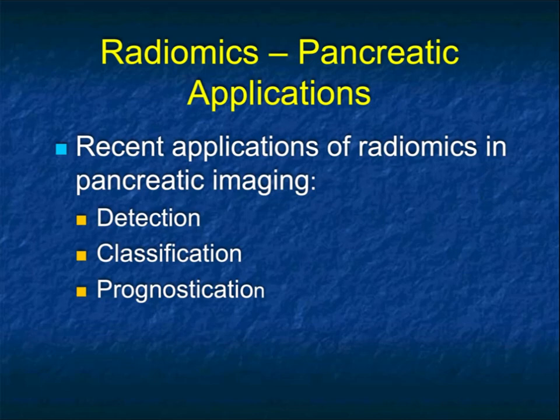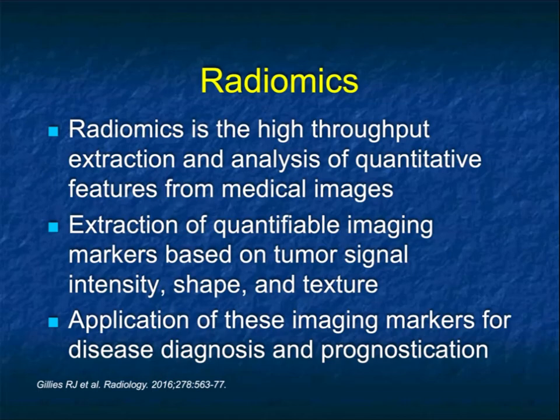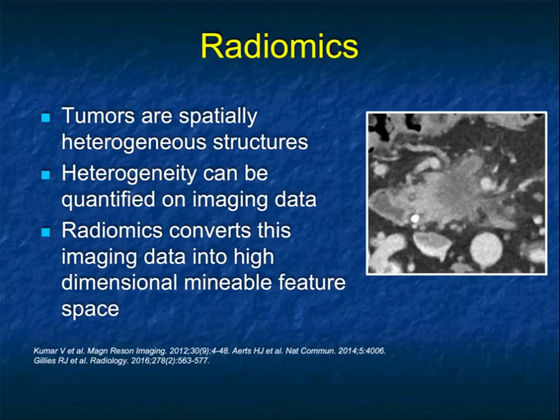In terms of radiomics applications, including our own work, detection, classification, and prognostication are the typical goals. Radiomics is the high-throughput extraction and analysis of quantitative features from medical images — extraction of quantifiable imaging markers and application of these markers for prediction. Everything with radiomics is taking what we've done already, learning from it, and then trying to predict as we look at more cases.